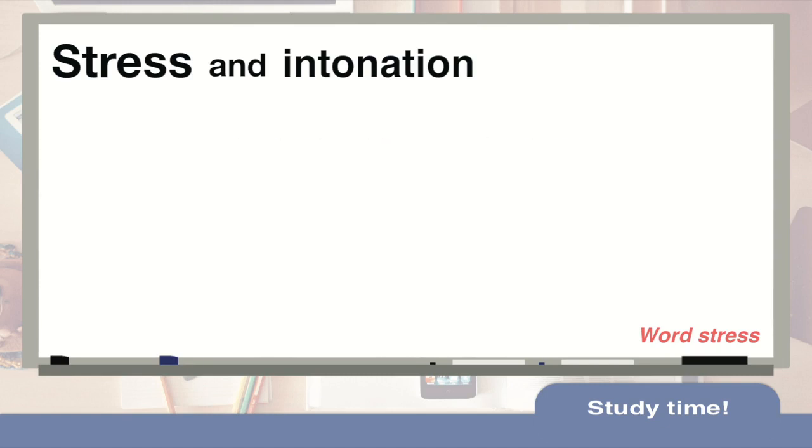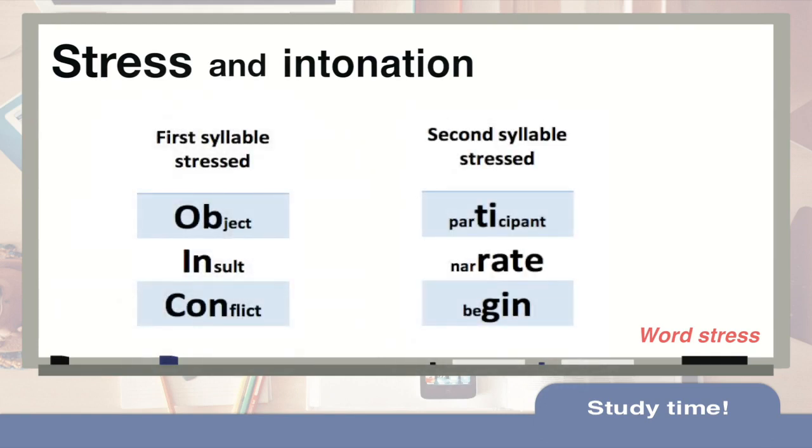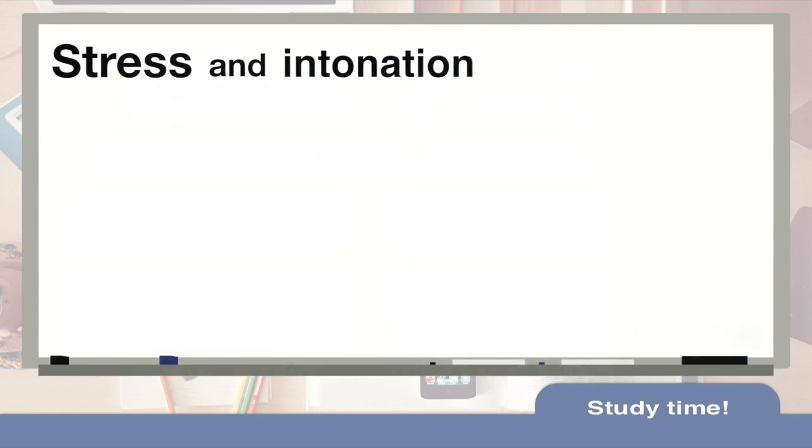The first syllable in the following words are stressed. For example, object, insult, conflict. And in the next set of words, the second syllable is stressed. Participant, narrate, begin. It's important when learning new vocabulary to understand where the stress is.